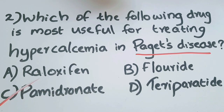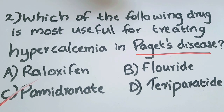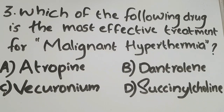Examples of bisphosphonates include alendronate, etidronate, and pamidronate. So the correct answer is option C: pamidronate — a bisphosphonate used parenterally to treat hypercalcemia in Paget's disease.